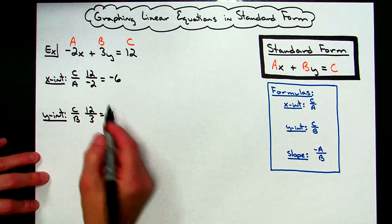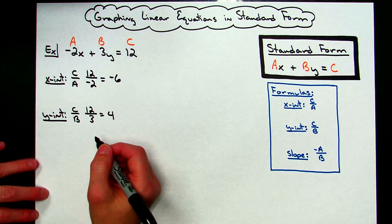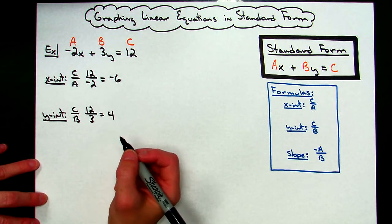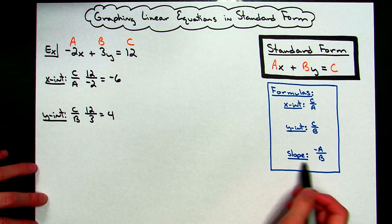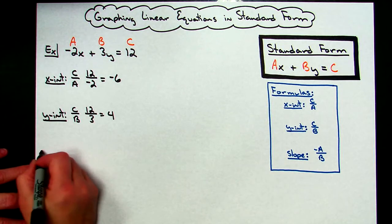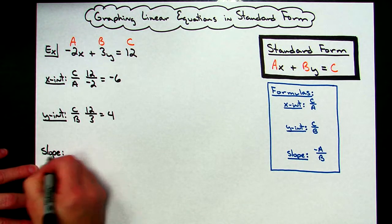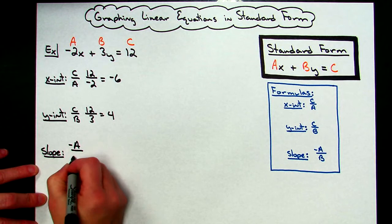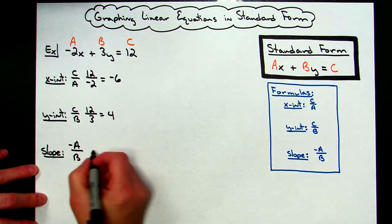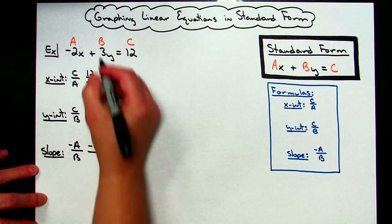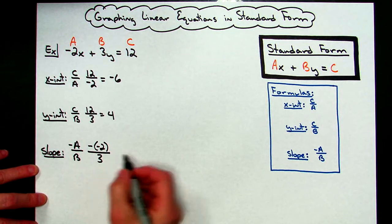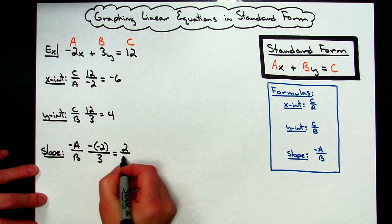Technically that's all I'm going to need to graph this, because I'm going to be able to graph those two points very easily. However, let's go ahead and look, and this is a good way to verify. My slope formula is negative A over B. And A is already a negative, so I'm going to have negative, negative 2, and then B is 3. So negative times negative is going to give me a positive. I'm going to have a positive 2/3 slope on this.